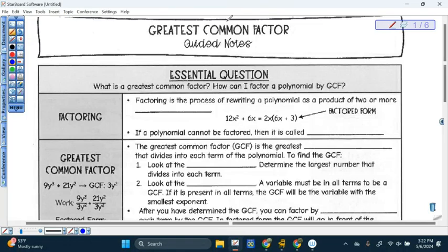Greatest common factor. That's what we did last Thursday. But now we're talking about this process called factoring. And when we factor something, we are breaking it down into smaller pieces.